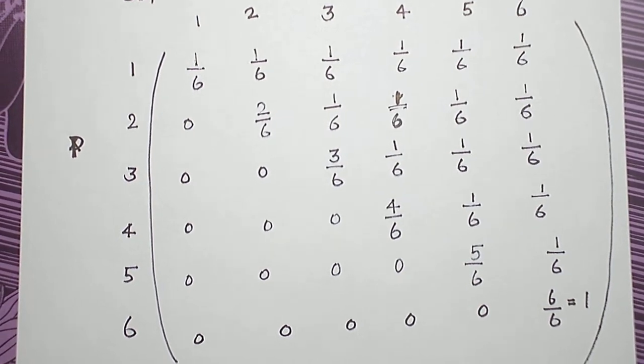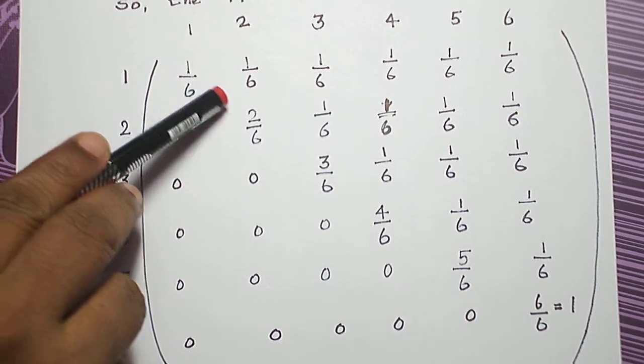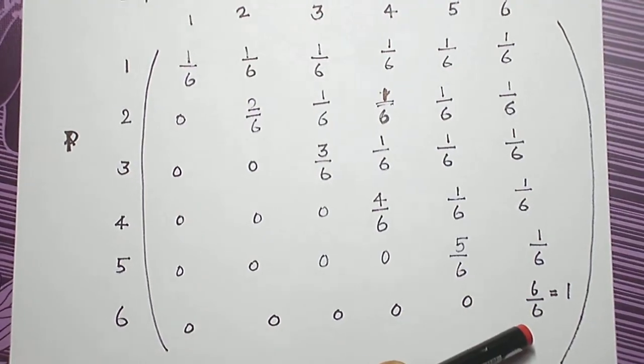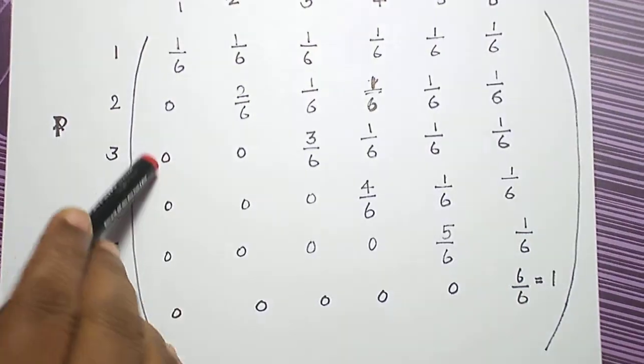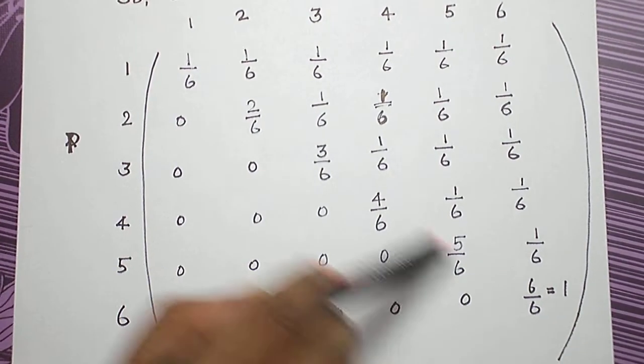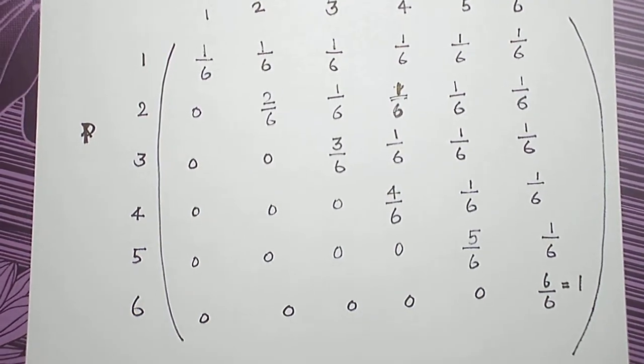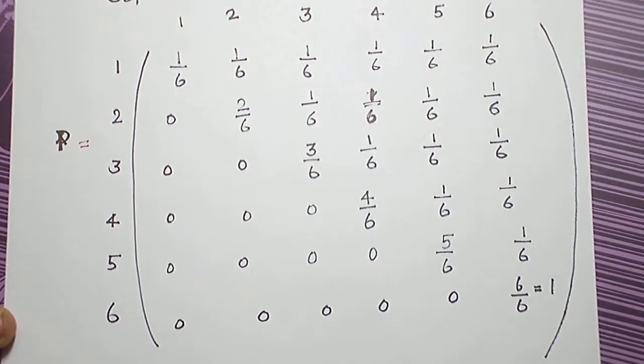And it is easier to remember this matrix. Diagonally, it is increasing: 1 by 6, 2 by 6, 3 by 6, 4 by 6, 5 by 6, 6 by 6. And the lower triangle is 0, below the diagonal it is 0, above the diagonal all the elements are 1 by 6. This is how we are going to get the transition probability matrix.